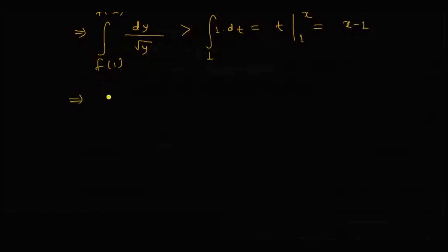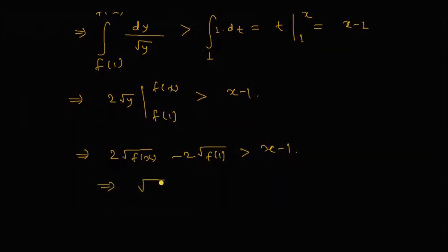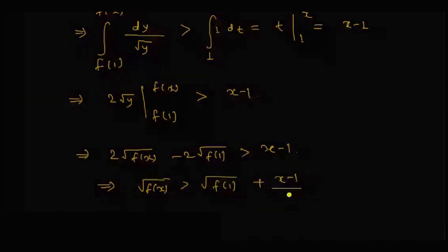So this will be 2 root Y with Y taking values from F 1 to F X is greater than X minus 1, which implies that 2 root F X minus 2 root F 1 is greater than X minus 1.